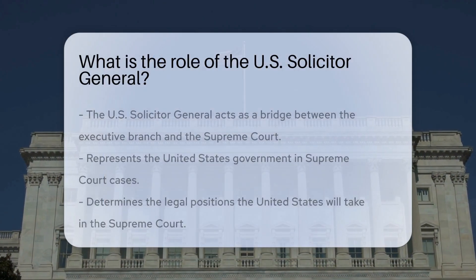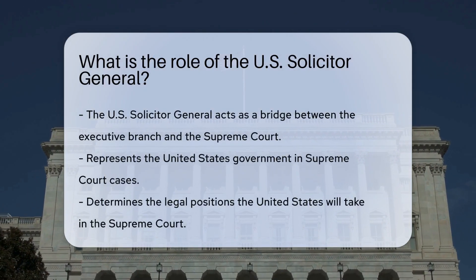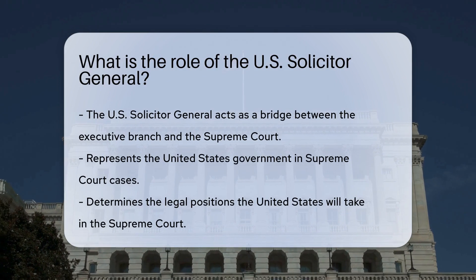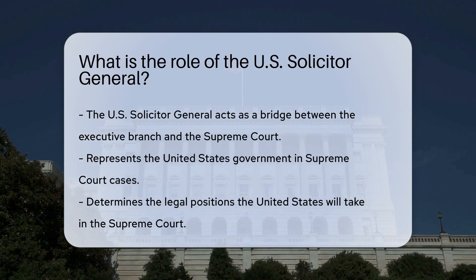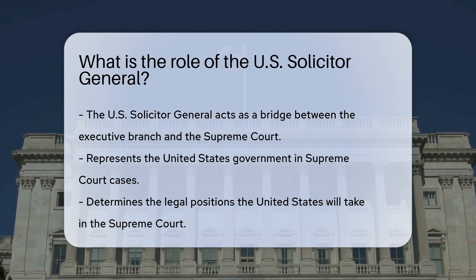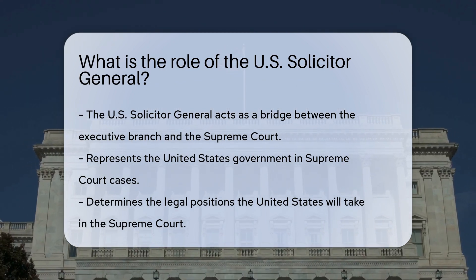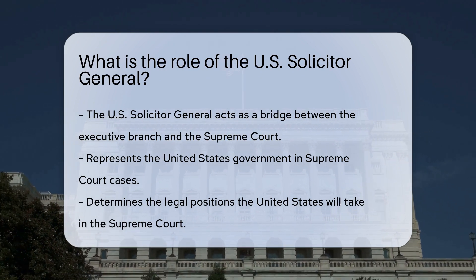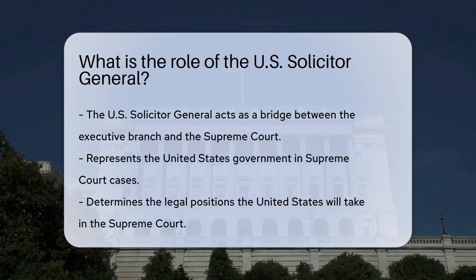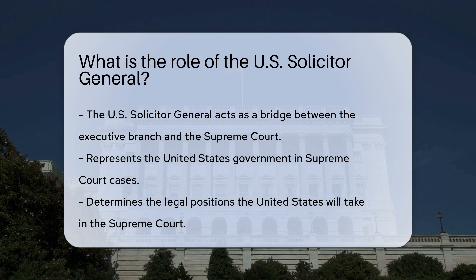The U.S. Solicitor General holds a pivotal position within the legal framework of the United States. This role serves as the bridge between the executive branch and the Supreme Court, embodying a unique blend of legal advocacy and advisory responsibilities. The Solicitor General represents the United States government in cases before the Supreme Court, ensuring that the government's views are effectively communicated and defended in the highest court of the land.